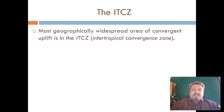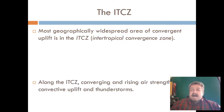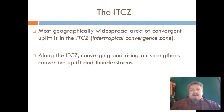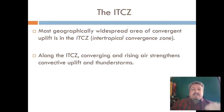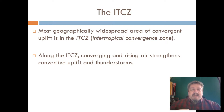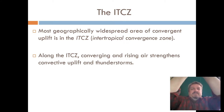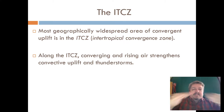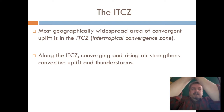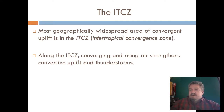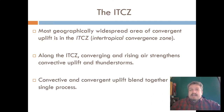The Intertropical Convergence Zone — there's this band that circles the Earth. In the summer it's in the northern half, and in the winter it's in the southern half; it basically follows the sun north and south. At that point, the air is so warm and humid that it's basically evaporating and rising straight up into the atmosphere, and the air behind it follows. We get this large, huge conveyance of thunderstorms, and it looks like a band.